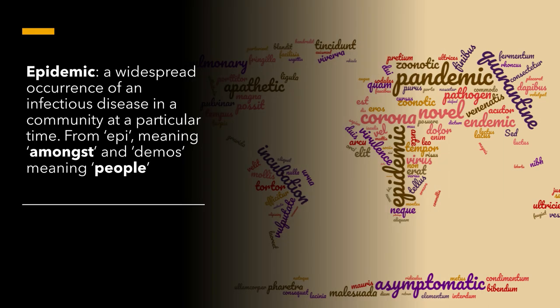Next we have epidemic. An epidemic is when a disease is very prevalent in one particular region or country — it hasn't yet reached the scale of a pandemic. Epi means 'amongst' in Greek, so it's amongst the people but not all the people. A widespread occurrence of an infectious disease in a community at a particular time — that's an epidemic.